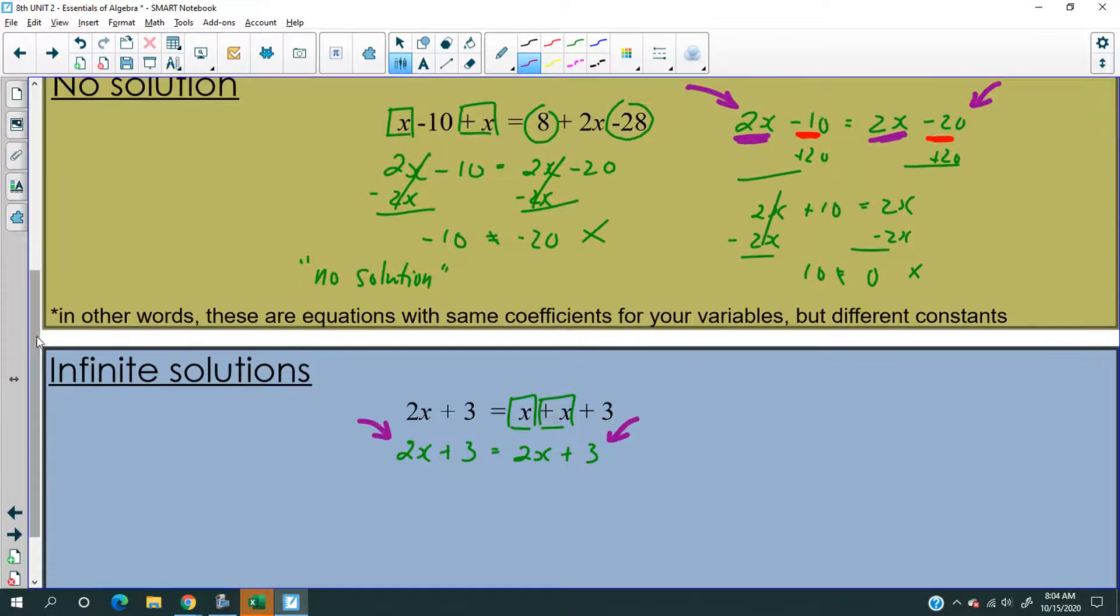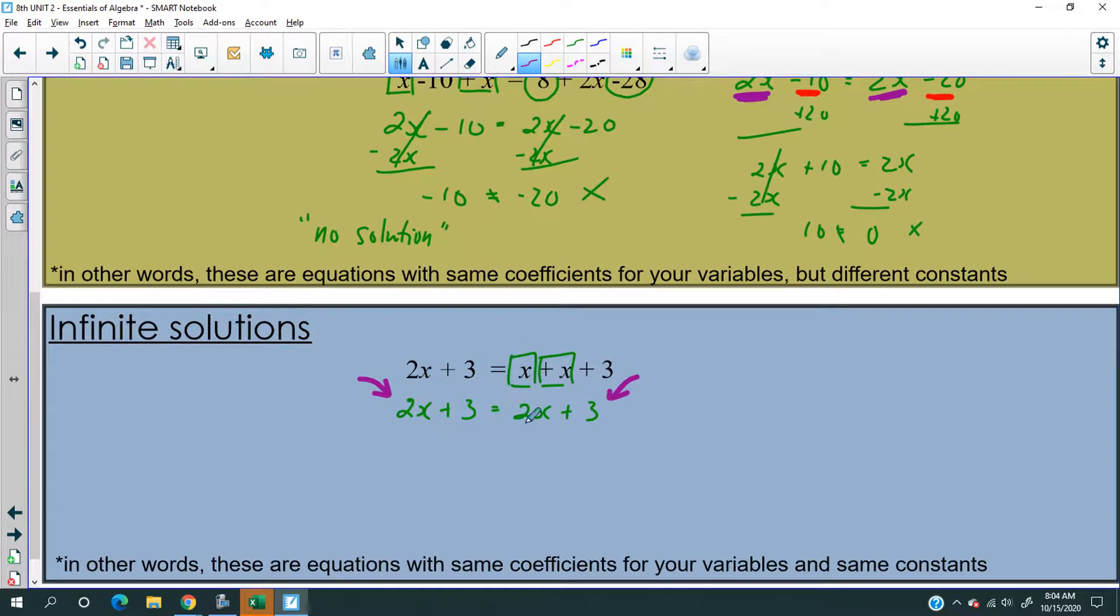Because if you subtract everything, and you subtract 3 on both sides, subtract 2x from both sides, you're just gonna have 0 equals 0. So, like, I mean, so what am I supposed to say to that? Like, 0? No, 0 is not the solution.